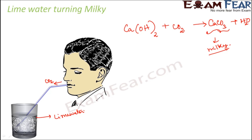Looking at the liquid inside the glass, calcium hydroxide is getting converted to calcium carbonate, so the chemical composition is changing — this is a chemical change. Someone might say the color change alone makes it a physical change, but whether a change is physical or chemical is determined by whether the chemical composition has changed, and here it has.